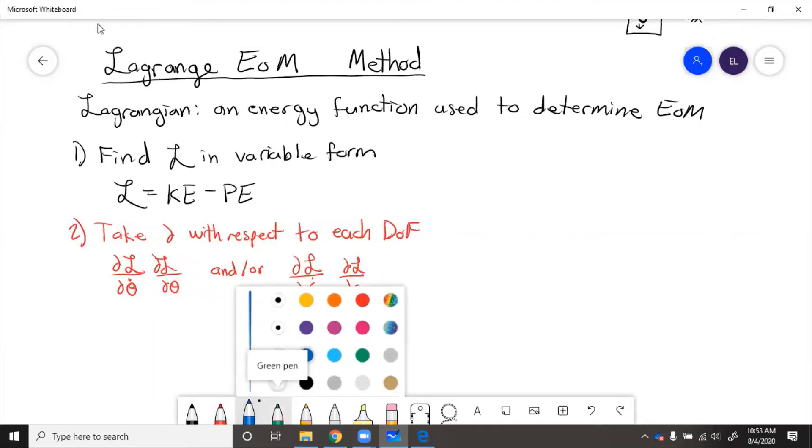So then the next step is take time derivatives of the velocity partial derivatives. So you get d dt of del L del theta dot, or d dt del L del S dot. This is to keep units consistent, because we know that force is going to have units of mass times acceleration. This gets those units right.